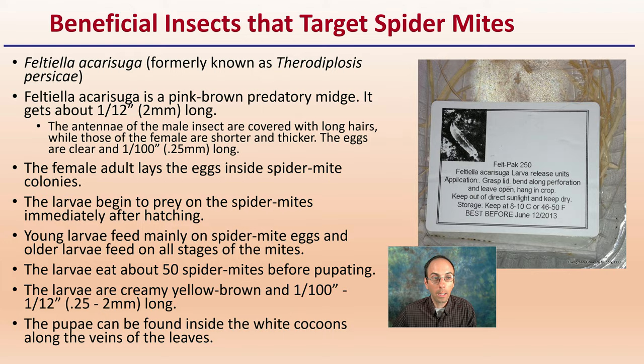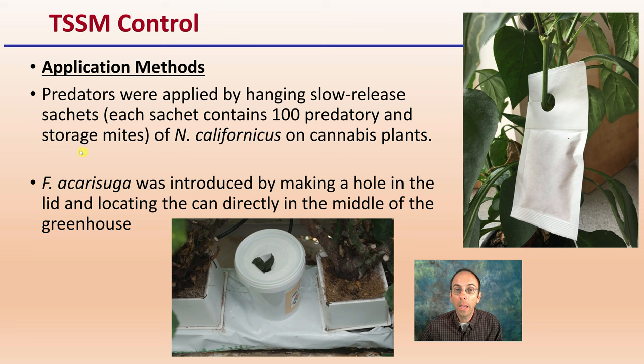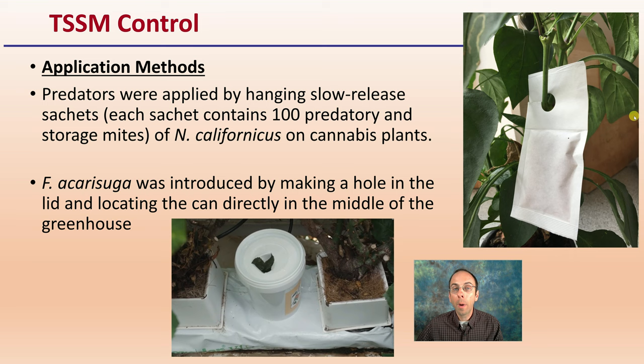For two-spotted spider mite control, the predators were applied by hanging slow-release sachets, each containing about 100 predatory and storage mites of californicus per cannabis plant. Feltiella is introduced by making a hole in the lid located directly in the middle of the greenhouse. Keep in mind that with beneficial insects, it's not an insecticide — you don't just mix and apply. Different methods of application are used to allow the greatest benefit for the beneficial insects to go about attacking your spider mites.